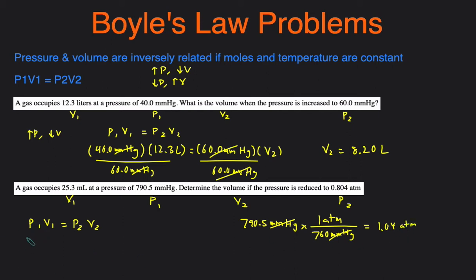Then we substitute the numbers in so P1 would be 1.04 atm. V1 is 25.3 milliliters. P2 is 0.804 atm and then volume 2 is what we're trying to solve for. So then we just divide both sides by 0.804. 1.04 times 25.3 divided by 0.804 and we get a final volume of 32.7 milliliters because we have milliliters on the other side.